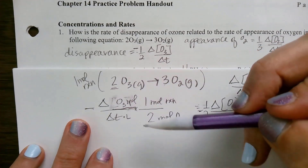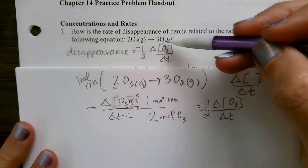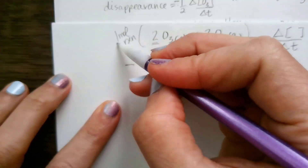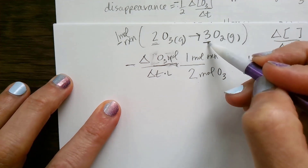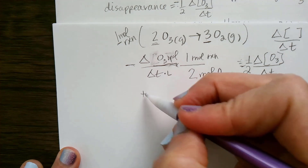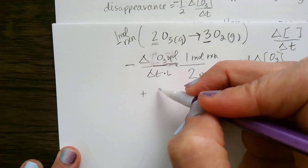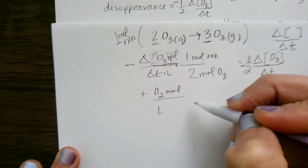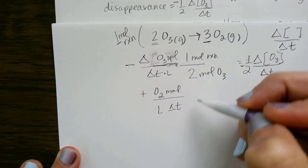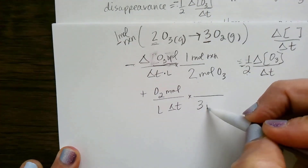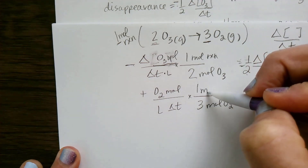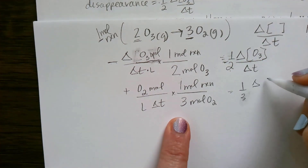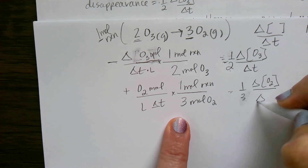Now, the appearance of oxygen: I have a 3 to 1 ratio — 3 moles of oxygen appear for every 1 mole of reaction. That's a positive value because it's appearing. The concentration of O₂ is moles per liter, and we still have that change in time on the bottom. We have 3 moles of O₂ for every 1 mole of reaction, so I can simplify to 1/3 times the change in concentration of O₂ over a certain amount of time.